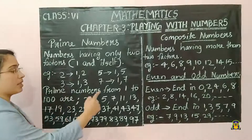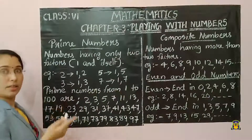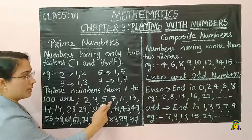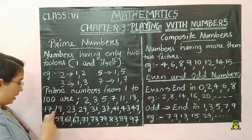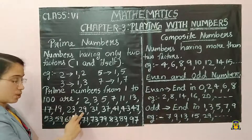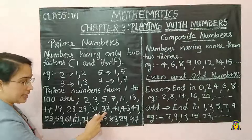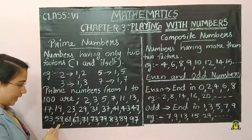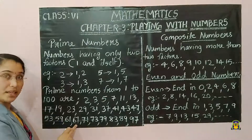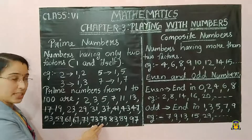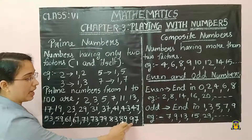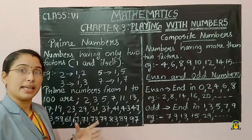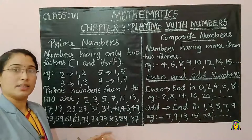Here I am writing prime numbers from 1 to 100. The prime numbers are: 2, 3, 5, 7, 11, 13, 17, 19, 23, 29, 31, 37, 41, 43, 47, 53, 59, 61, 67, 71, 73, 79, 83, 89, and 97. In total, there are 25 prime numbers between 1 and 100.